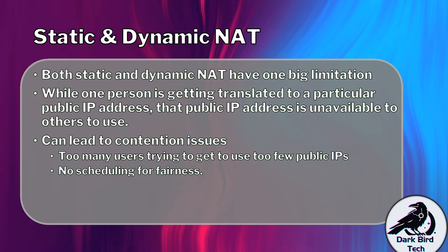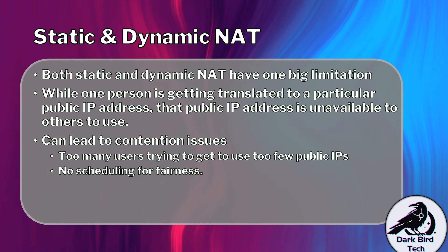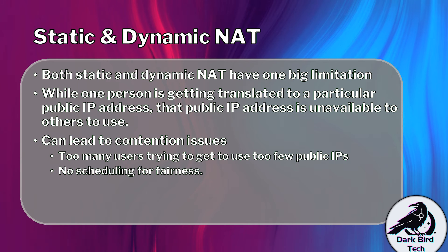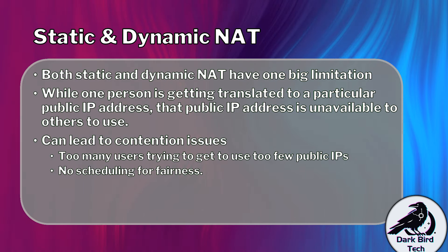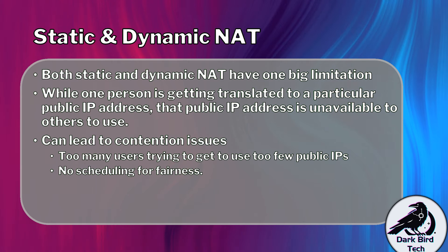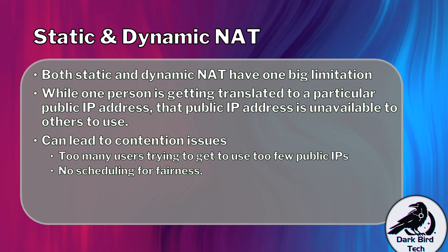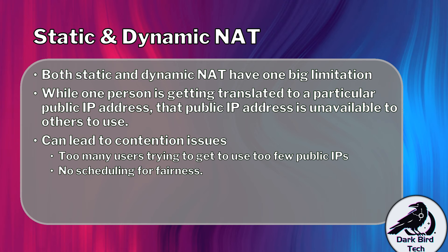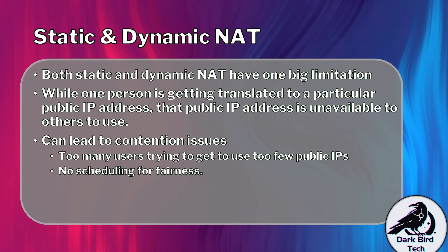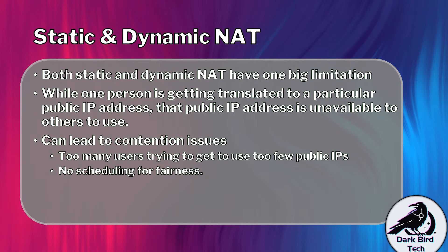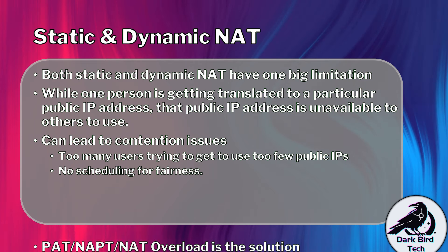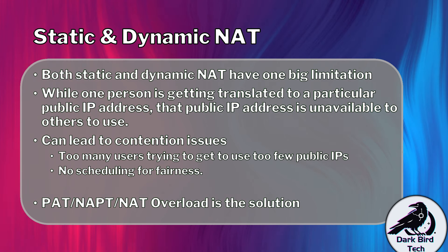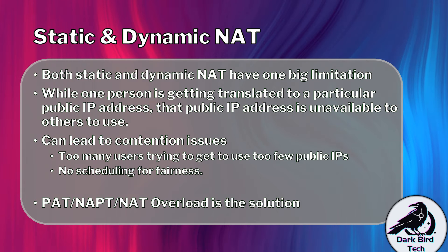NAT does not have any sort of scheduling for fairness. A way around this is you could go and get more public IP addresses from your ISP, but that does cost money. One of the things that you pay your ISP for, besides the internet access and the speed, is the allocation of at least one public IP address — maybe more — and it does cost a pretty penny sometimes. So we have port address translation, also known as network address port translation, or NAT overload, as the solution.